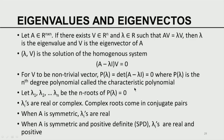An nth degree polynomial has n roots. Let lambda_1, lambda_2, ..., lambda_n be the n roots of p(lambda) = 0. From the fundamental theorem of arithmetic, the lambdas can be either real or complex. Complex roots always come in conjugate pairs. The reason complex roots come in conjugate pairs is that the elements of matrix A are real, which implies the coefficients of the polynomial p(lambda) are real. When solving a polynomial with real coefficients, complex roots must be complex conjugates. That is for any general matrix.